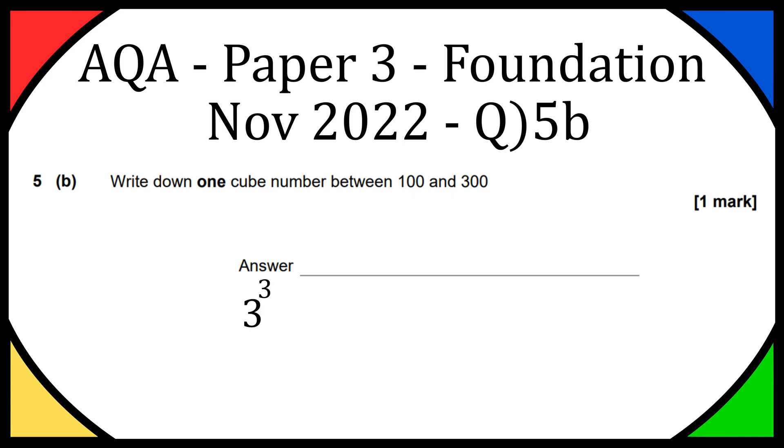So for example, 3 cubed would be 3 times 3 times 3, which is 27. Obviously not between 100 and 300, but 27 would be the cube number.